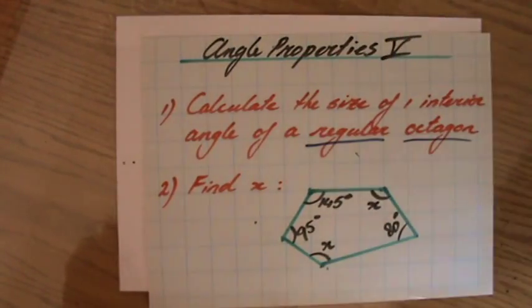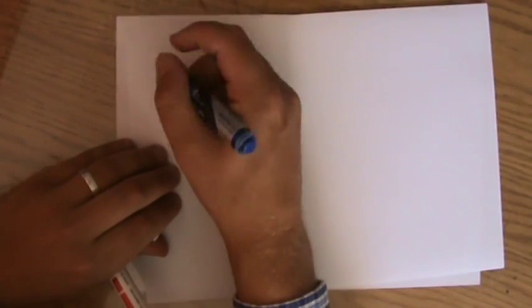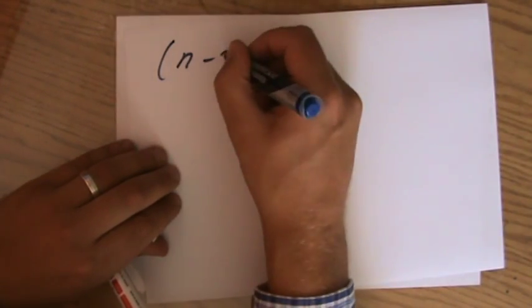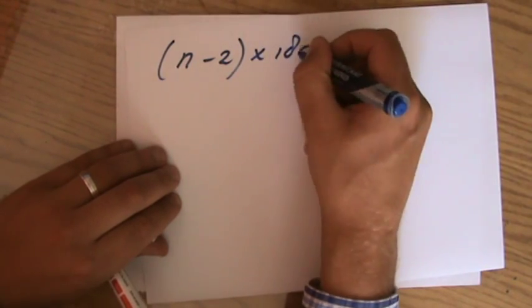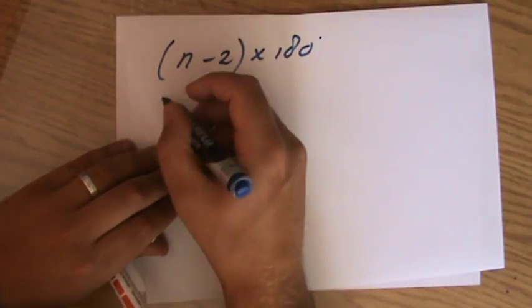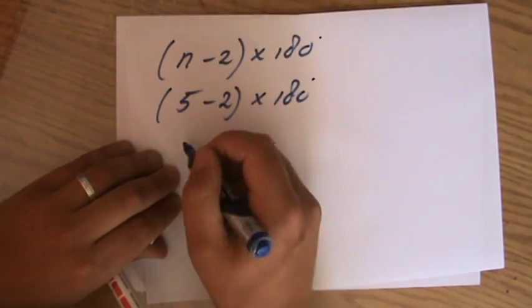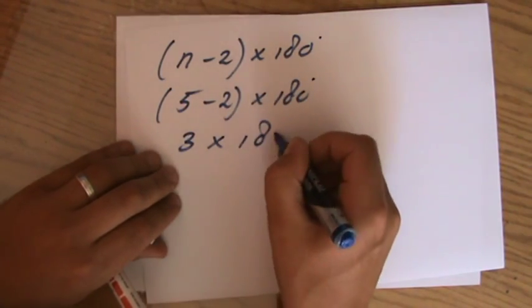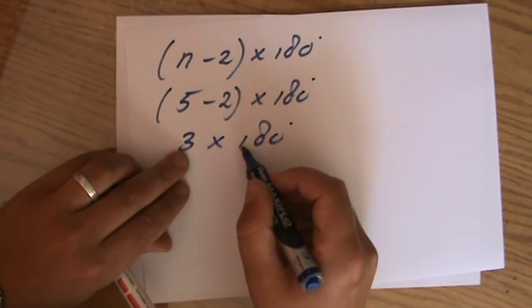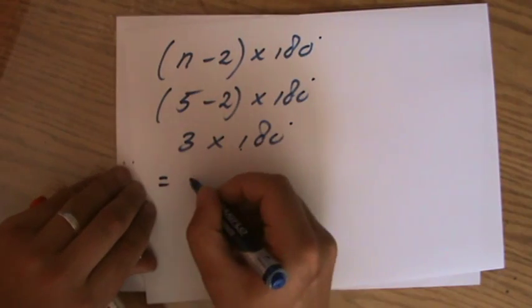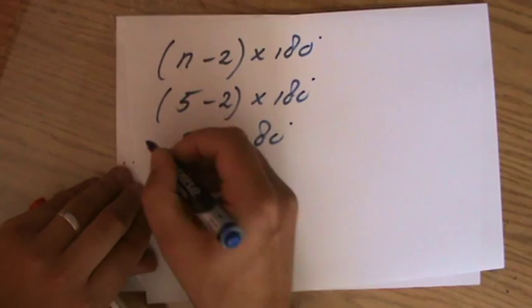And a pentagon, how many degrees? What is the sum of the interior angles of a pentagon? Well, let's find out. We don't have to remember that. We understand this formula. 5 minus 2 times 180 degrees. 3 times 180 degrees, what is that? That will be 540 degrees.